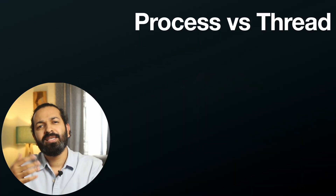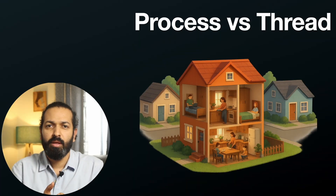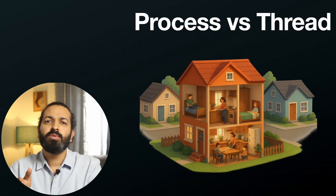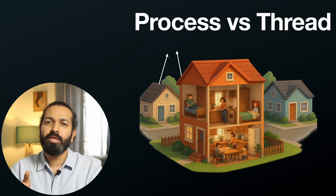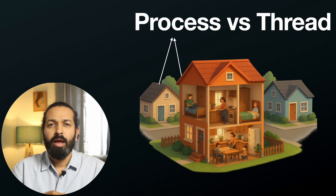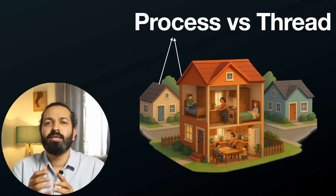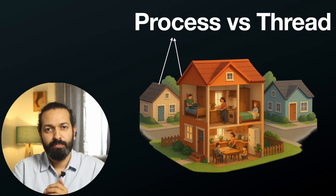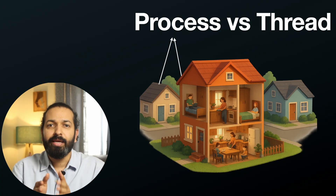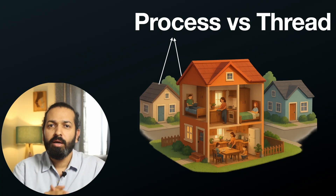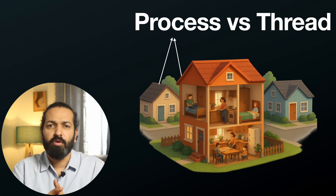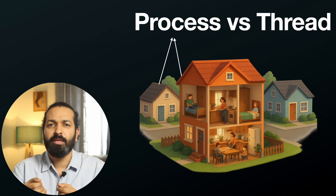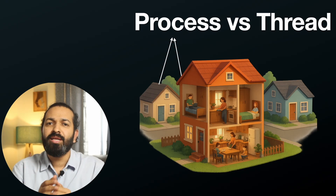Think of a process like a separate house in the neighborhood. Each house has its own address, own kitchen, own bedroom, and one house cannot directly access another house's stuff. But here's the problem with processes: creating them is expensive, context switching between them is slow, and communication between them is not straightforward — it requires special methods. That's where threads come in.